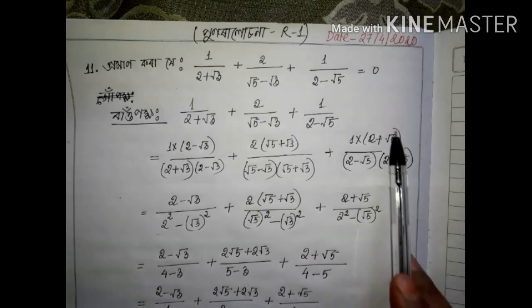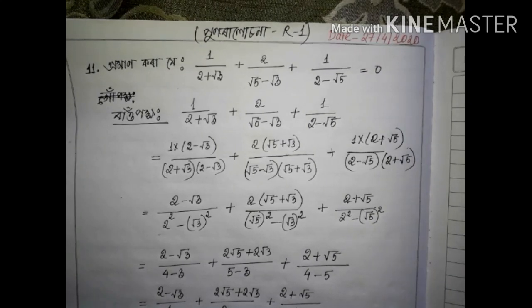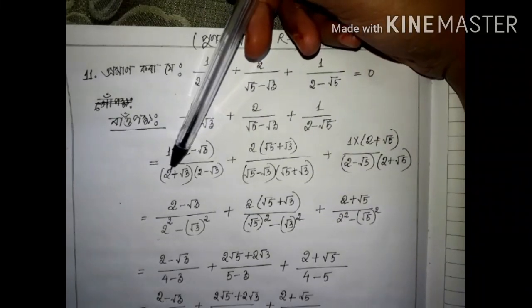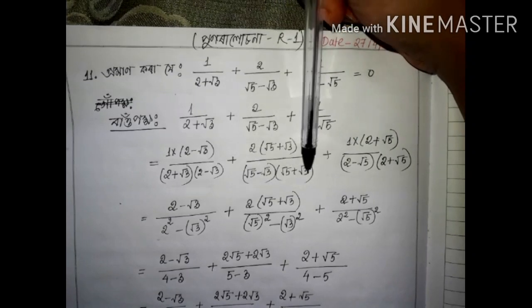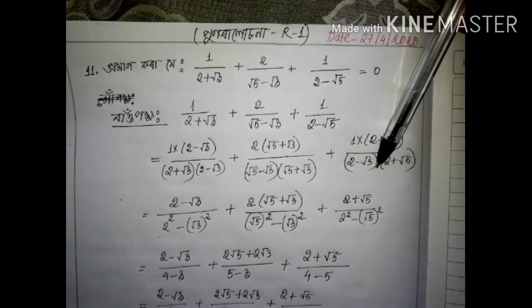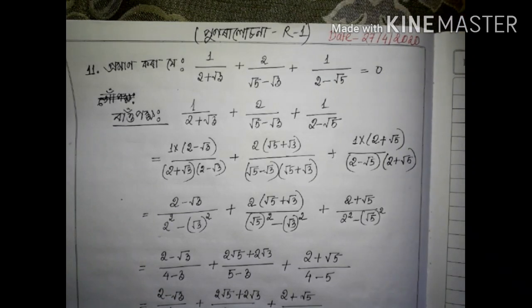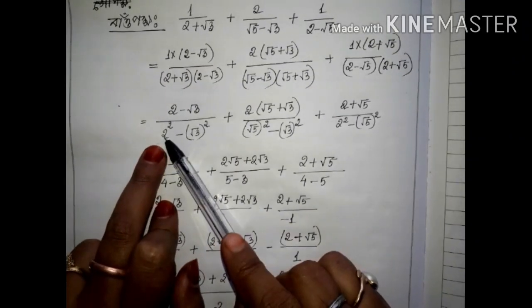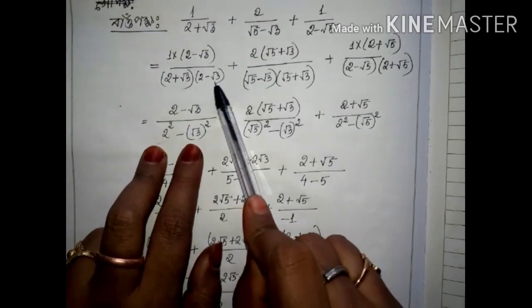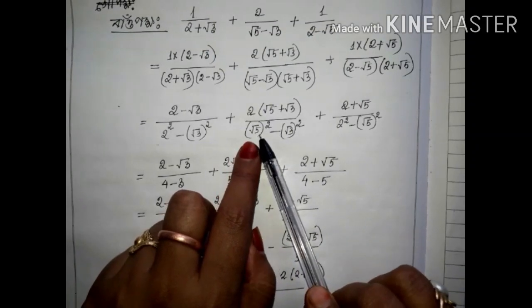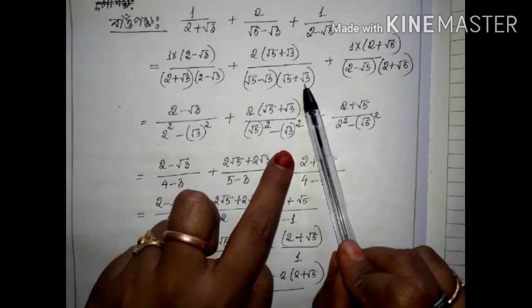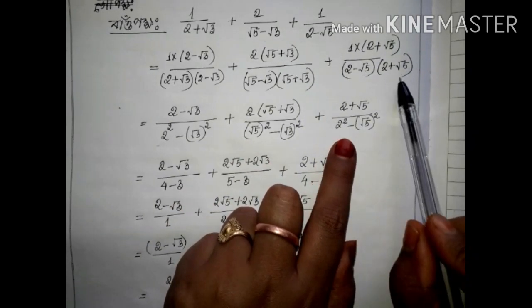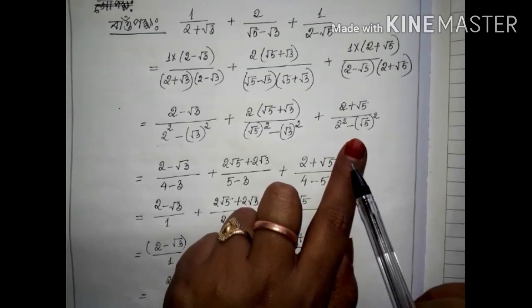So 2 minus root 5 is equal to 2 plus root 5. What does that mean? I am thinking how to apply the a plus b into a minus b formula. You can apply the a plus b into a minus b formula, because a minus b times a plus b follows that identity — so a squared is b equal to a cubed.